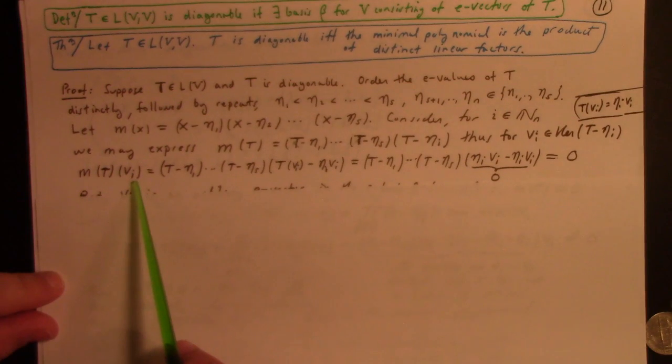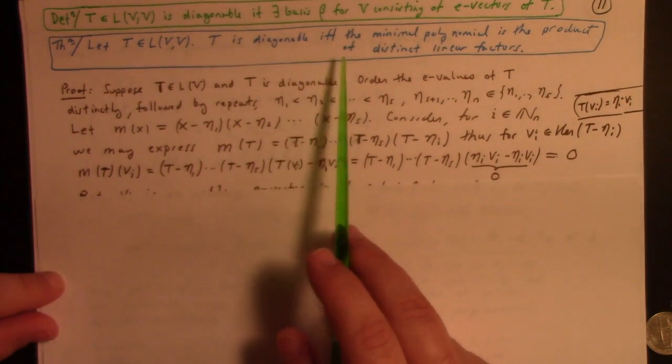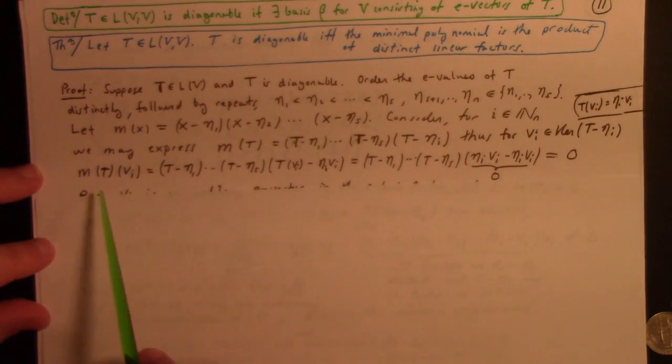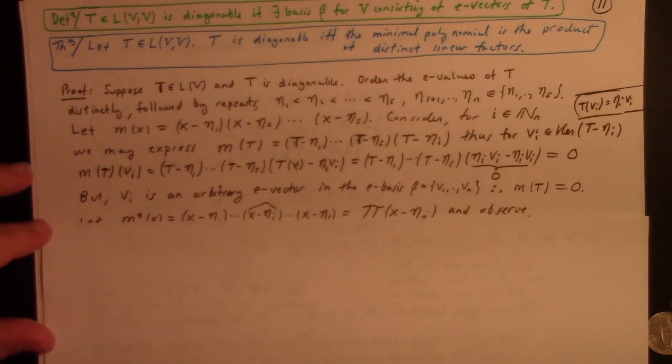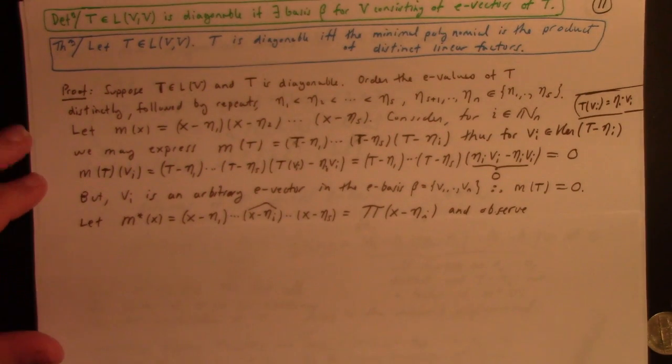But on the other hand, i is arbitrary. So since we assumed that t is diagonalizable, if I have that m of t is zero on each one of the things in the basis, well, then by the linear extension theorem, it follows that m of t is zero transformation. And that alone doesn't prove it's a minimal polynomial, but it proves that the minimum polynomial has to divide it.